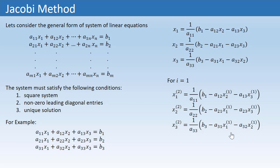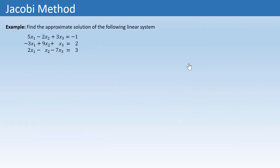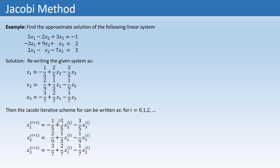Now let's consider an example and see how this algorithm works. We are given a 3×3 square system. The leading diagonal entries are 5, 9, and −7, which are clearly non-zero. Assuming this system has a unique solution, we can find its approximate solution using the Jacobi method. The algorithm says we find the solution expression of X1 from the first equation, X2 from the second, and X3 from the third, writing superscript I+1 on the left and I on the right to create the Jacobi iterative scheme.